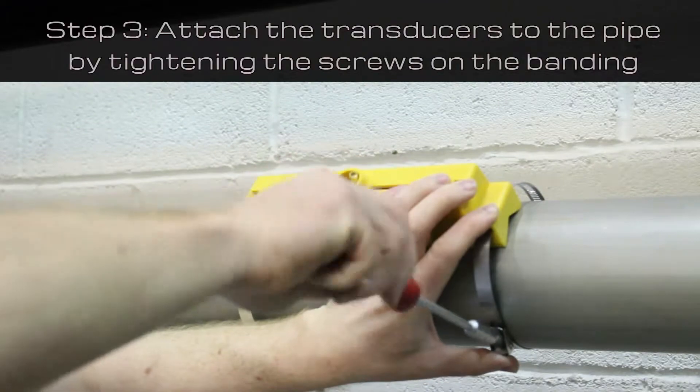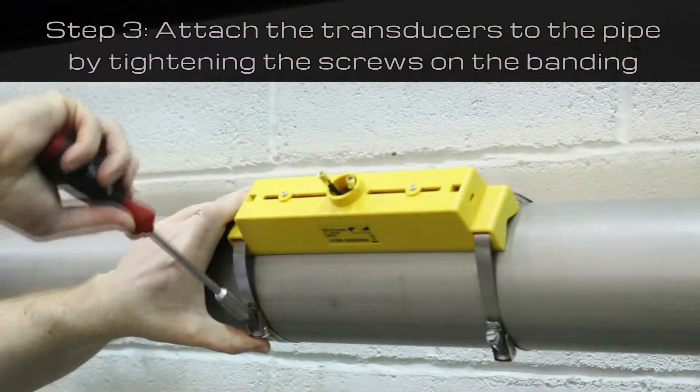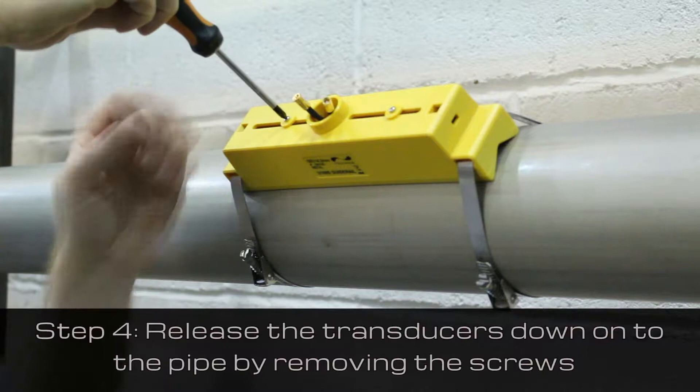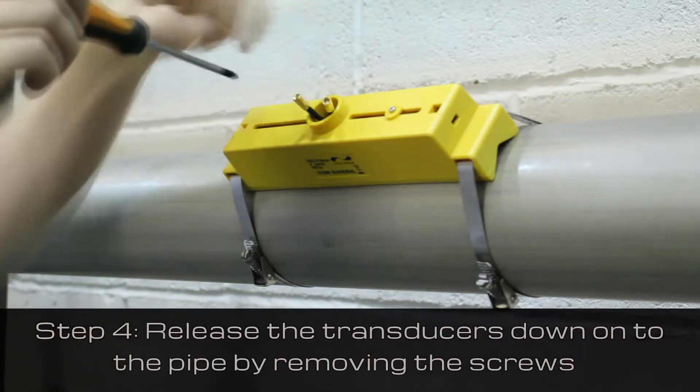Next, attach the transducers to the pipe by tightening the screws on the banding. Release the transducers down onto the pipe by removing the screws.